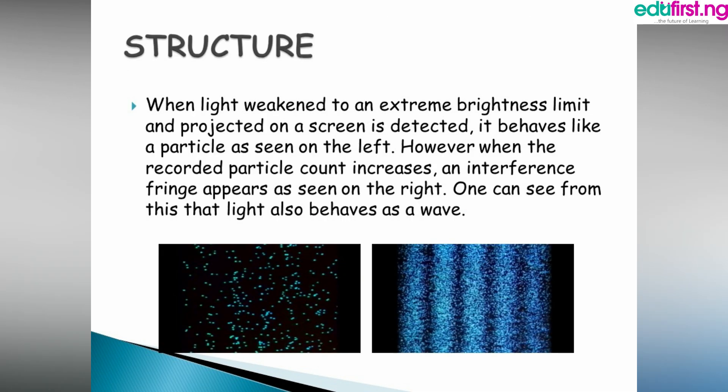When light weakens it shows a dark area, but when light brightens it is projected on the screen as a small dot, behaving like a particle as seen on the left-hand side of the picture. However, when the recorded particle count increases, an interference fringe appears. From this we can see that light behaves as a wave.